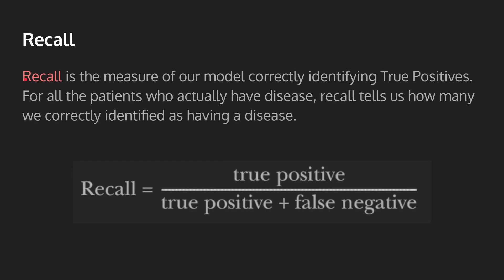A metric that weighs what we just talked about — weighing correctly identifying true positives as more important — is called recall. Recall is basically the measure of our model correctly identifying true positives. It's true positive divided by true positive plus false negative — that's the entire top row of our confusion matrix. So in our case, for all the patients who have the disease, recall tells us how many we correctly identified as having the disease. It's very useful for our case.